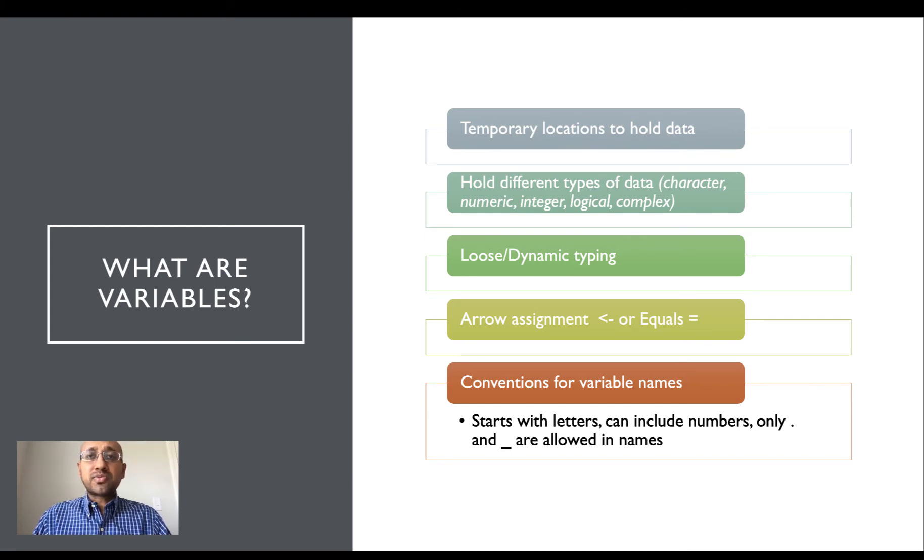Most programming languages have conventions related to the names that variables can have. Specifically in R, the name of a variable needs to start with a letter. It can include numbers and only dot and underscore special characters are allowed in variable names.